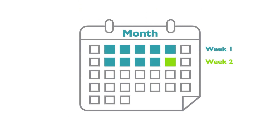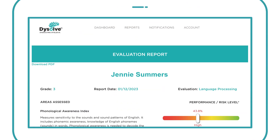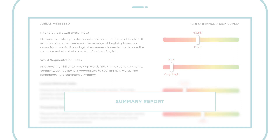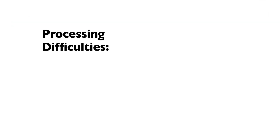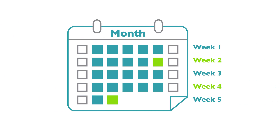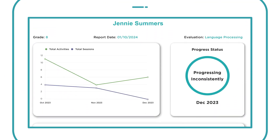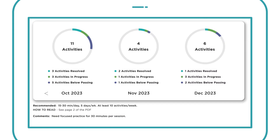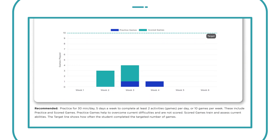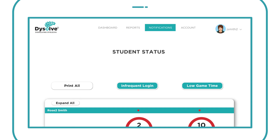After the first two weeks, Dissolve AI will generate an evaluation report. You can see this report from your dashboard. The evaluation report summarizes the risk levels for key indices important for reading. Processing difficulties underlie many conditions like dyslexia, learning disabilities, and ADHD. About a month after this evaluation, you can track your student's usage and progress from your dashboard.